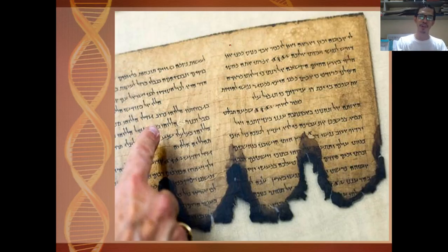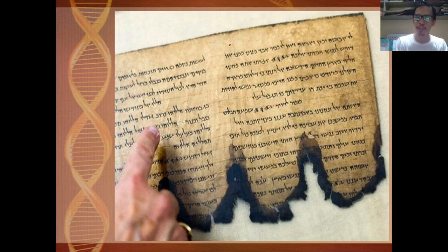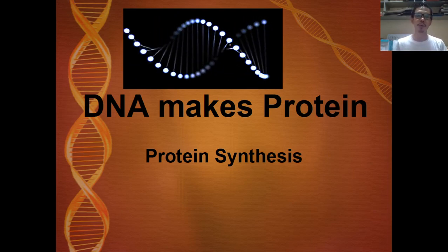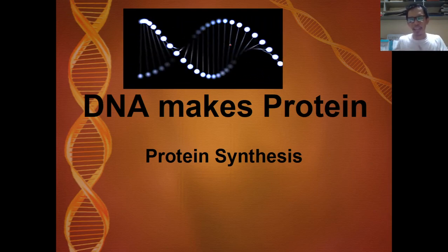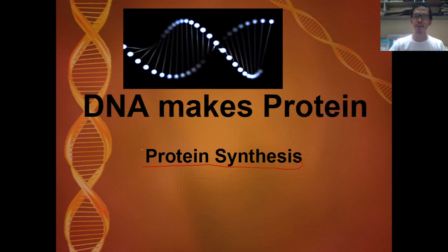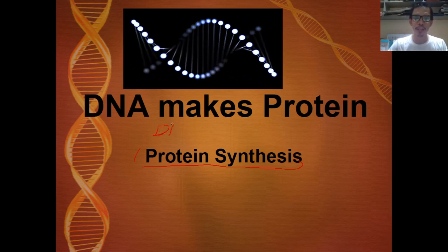The next one is the Dead Sea Scroll. If you are familiar with the Dead Sea Scroll, this is where the Old Testament — or the New Testament rather — is translated. When experts translate this Dead Sea Scroll, that is when they produce the New Testament of the Bible. So those are the things we are going to talk about — codes and translations — and basically we will talk about how DNA makes protein.